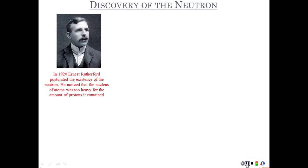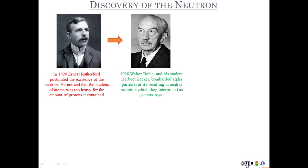I'll start with a history lesson. The discovery of the neutron started back in 1920 with Ernest Rutherford. He postulated the existence of the neutron and had good reason to believe one must exist, because at the time they observed atomic nuclei to possess more mass than could be accounted for by their protons alone. Years later, a German physicist and his student Becker bombarded alpha particles — the nucleus of a helium atom — at beryllium, and as a result it released what they called neutral radiation, which they thought could be gamma rays, a highly energized particle of light.